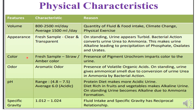The color of a fresh urine sample is straw colored to amber colored. The presence of the pigment urochrome imparts the color to the urine. You must remember that the color of urine is because of the pigment urochrome.